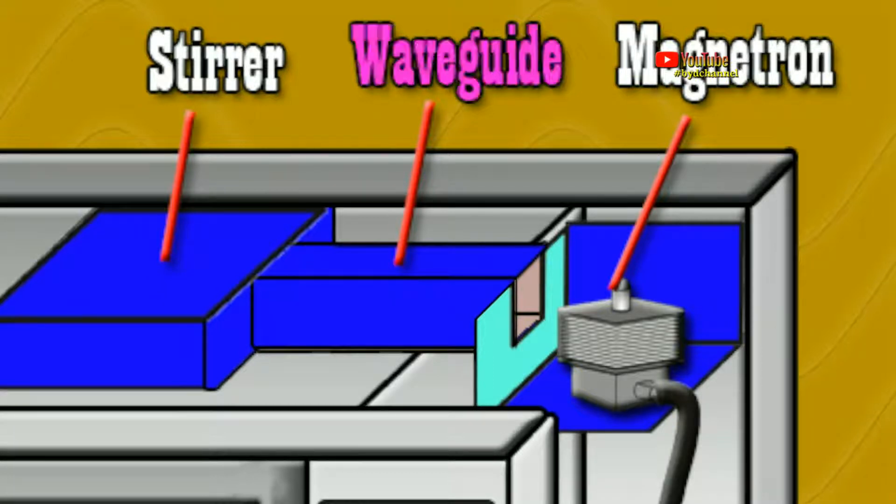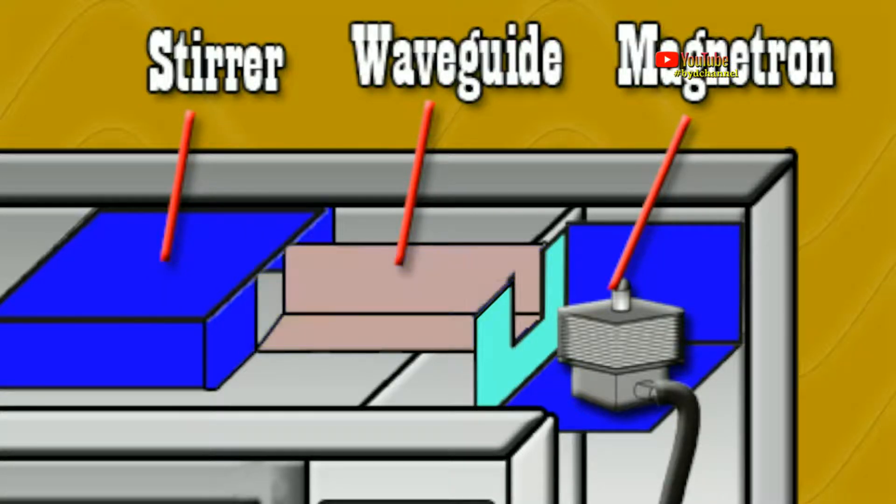Waveguide is a component designed to direct microwaves. Microwave waveguide is made from conductor material.